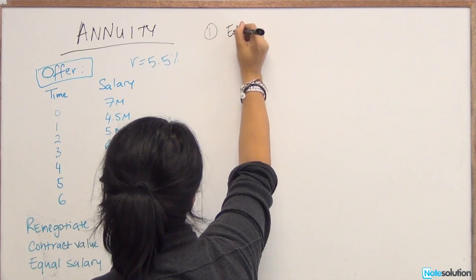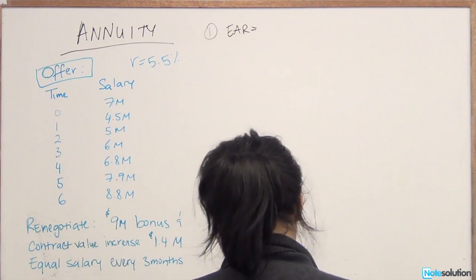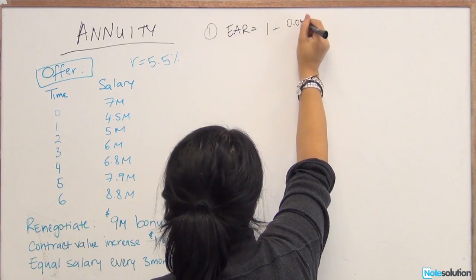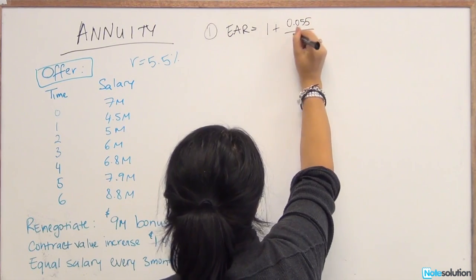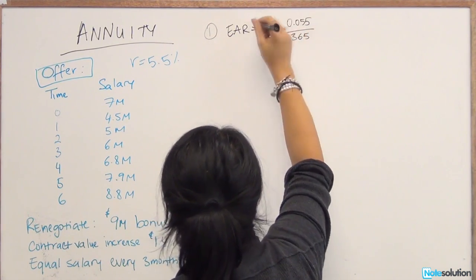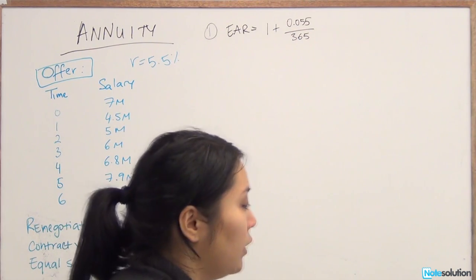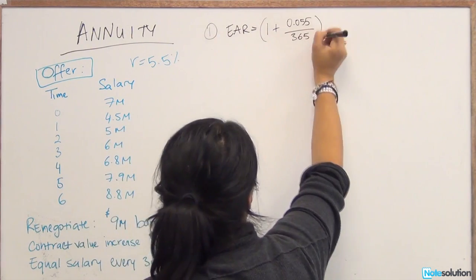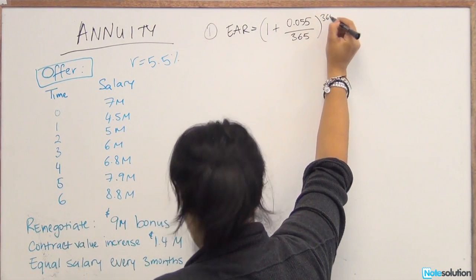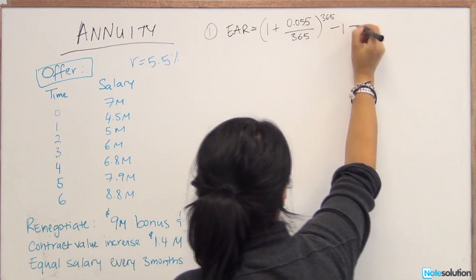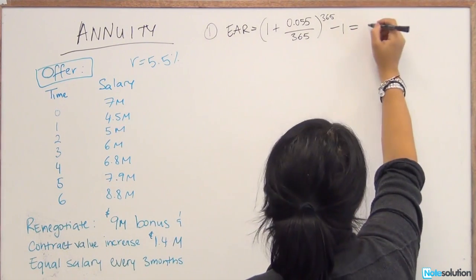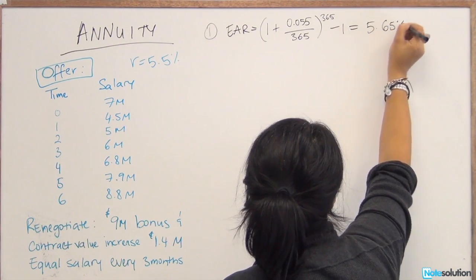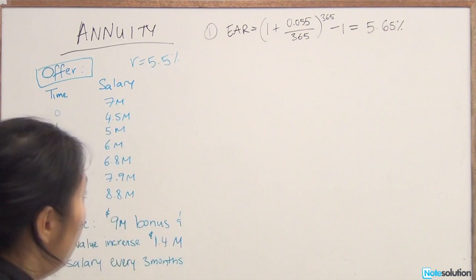We have effective annual rate, and it's going to be equal to 1 plus 0.055 divided by 365 to the power of 365 minus 1. So this is just recall your basic effective annual rate versus stated annual rate formulas. So we get an effective annual rate of 5.65%.